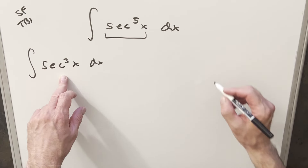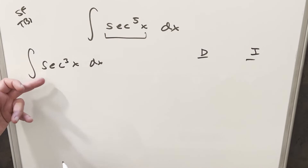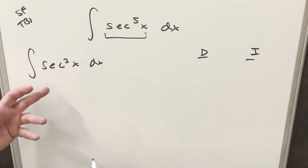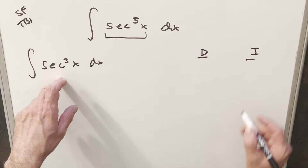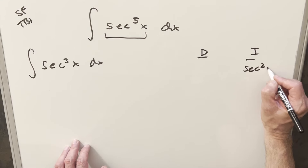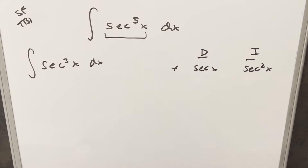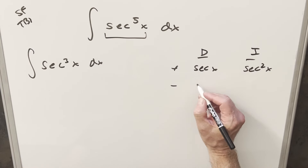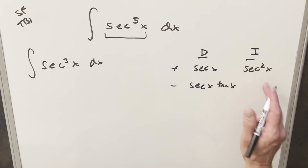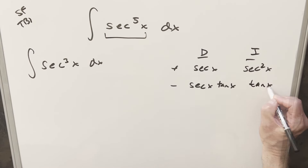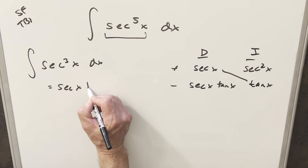To do this, I'm going to use integration by parts — the DI method or tabular integration over here to the right. We can split secant cubed x up a few different ways, like secant times secant squared. I think what I want to do is integrate secant squared x, because that's easy to integrate, and then differentiate secant x. The derivative of secant x is secant x times tan x, and integrating secant squared x gives tan x. So part of our solution on the diagonal is just secant x times tan x.